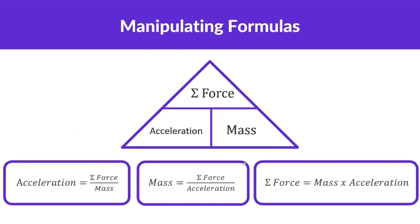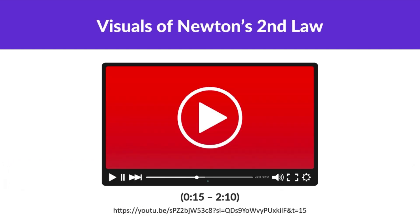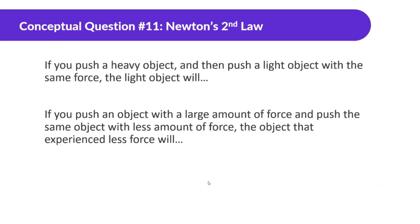Here is the manipulation formula — we've seen these triangles a lot, so pause the video to look at it if you like. The main formulas are: the sum of all forces equals mass times acceleration; acceleration equals net force divided by mass; and mass equals net force divided by acceleration. Pause if you want to write it down. Let's do some conceptual examples.